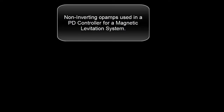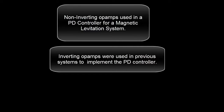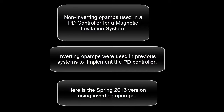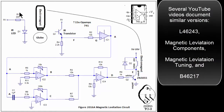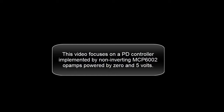This video focuses on a PD controller for a magnetic levitation system using non-inverting op-amps. Inverting op-amps were used in previous systems, including the Spring 2016 version, with several YouTube videos documenting similar implementations. This version uses non-inverting MCP6002 op-amps powered by 0 and 5 volts.